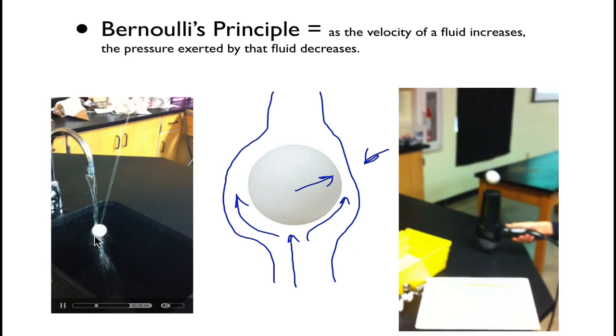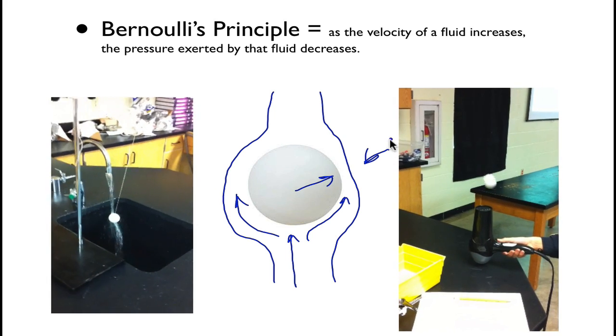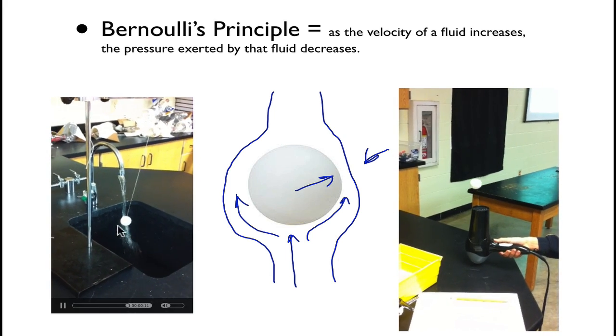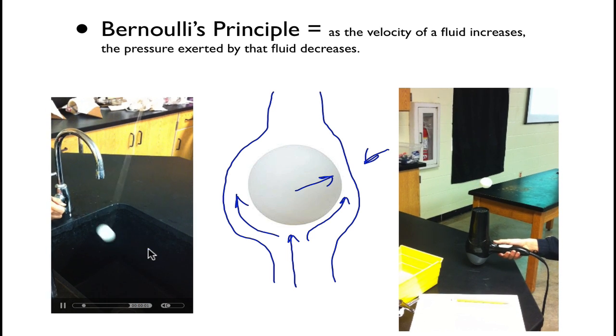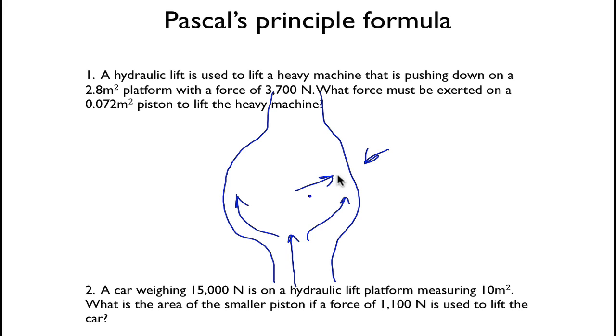So you can see it pushes it back into that low-pressure area all the way around. Same thing with this. You have a liquid here that's moving fastly around it, so we have a low-pressure area. We have high-pressure areas around it. Keeping it in place kind of creates a little vacuum there. So that's Bernoulli's principle. Okay, so we do have some practice problems for you guys to do. We have a formula that goes along with Pascal's principle, and let me tell you what that formula is, so you can write this in your notes.